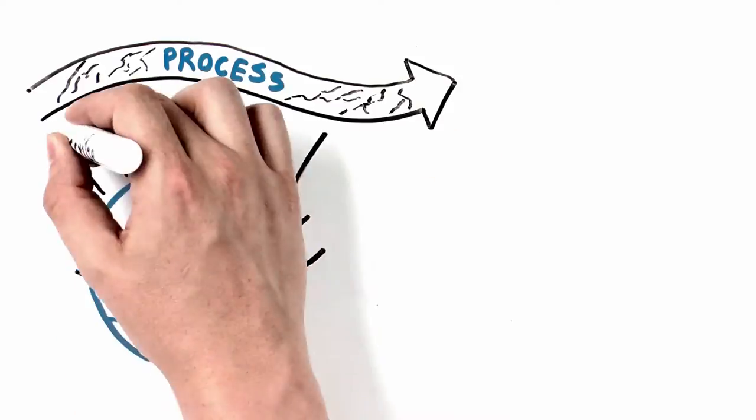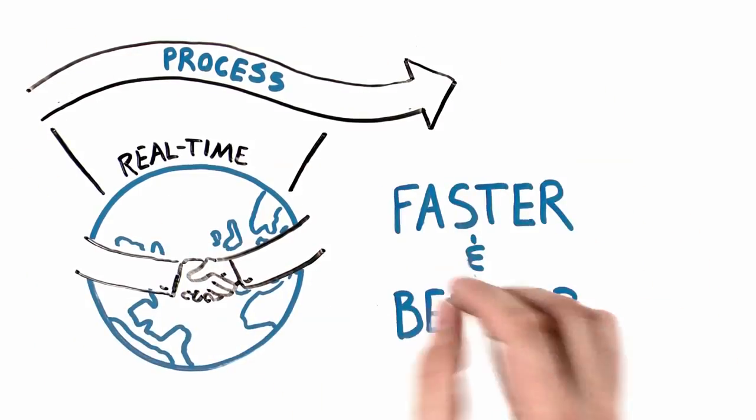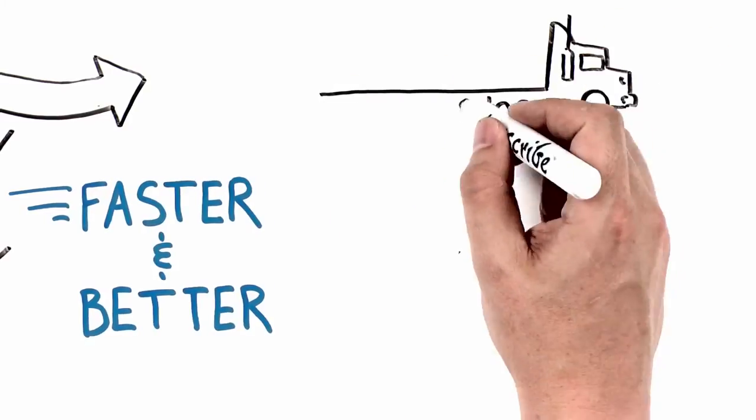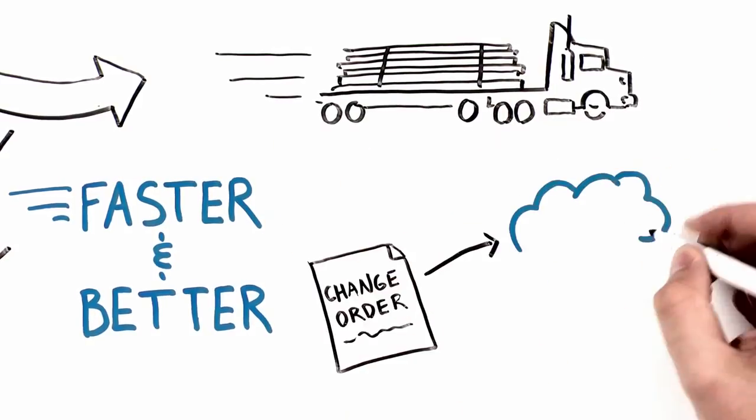What does this mean? Simply put, faster and better. Steel is delivered sooner. Change orders disappear.